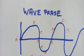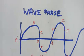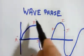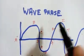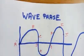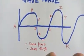In this video we are going to look at what is called wave phase. Wave phase specifies the location of a point within a wave cycle. We will clear up this concept using a transverse wave with certain points marked on it.